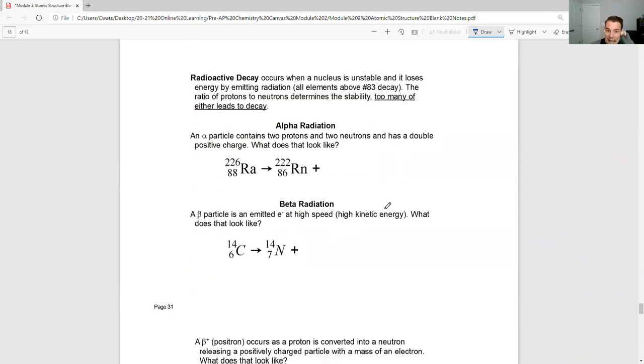Radioactive decay occurs when a nucleus is unstable and it loses energy by emitting radiation. All elements above number 83 decay, so all elements above number 83 are radioactive. The ratio of protons to neutrons determines the stability. Too many of either leads to decay. Ideally, we would want a one-to-one ratio of protons to neutrons within the nucleus.